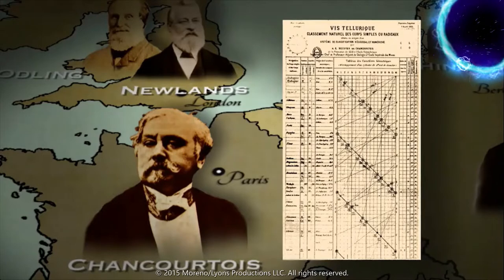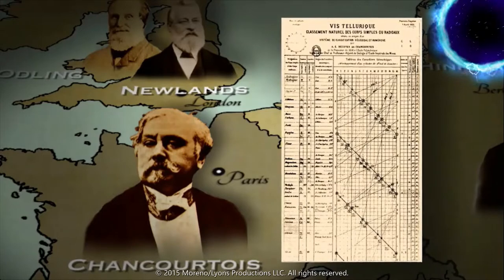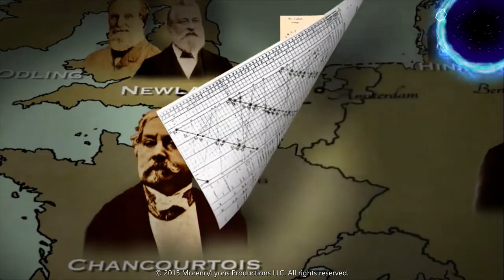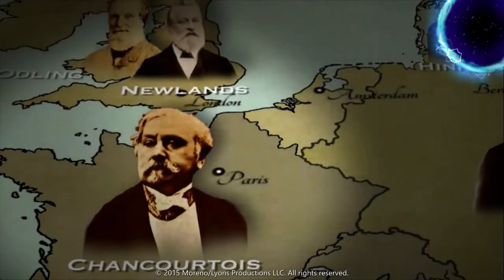But Chancourois's paper, published in a geology journal, attracted little attention. When he submitted his paper to the publisher, the publisher lost the diagram — and on something like the periodic system, the diagram is absolutely essential. He was forgotten and neglected. It took several other people 30 years later to point out that Chancourois had technically arrived at the periodic system first.